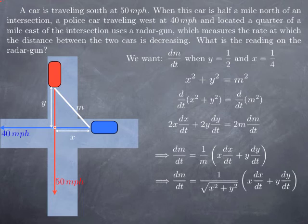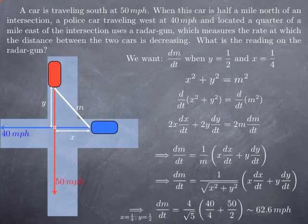Now we know dx over dt, we know dy over dt, and we have specific values for x and y. So when I plug x equal one fourth, y equal one half, dx over dt equal 40, and dy over dt equal 50, we plug things in and obtain 62.6 miles per hour.